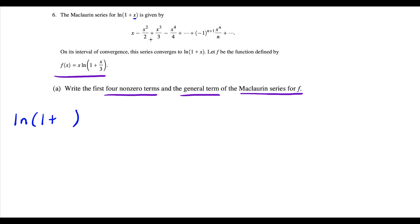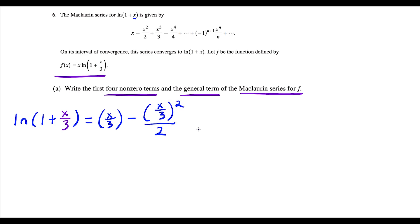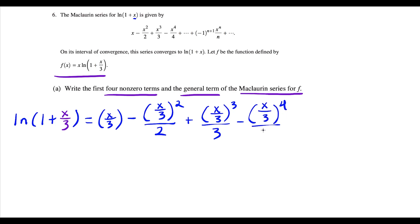So instead of 1 plus x, we're looking at x over 3. Now we can go ahead and expand this — so this is going to be very algebra heavy. That first x we're replacing with x over 3, and we're going to do the same for the other x's. We have x over 3 squared divided by 2, and then plus x over 3 to the third divided by 3. And then we need a fourth non-zero term, so we have minus x over 3 to the fourth divided by 4.